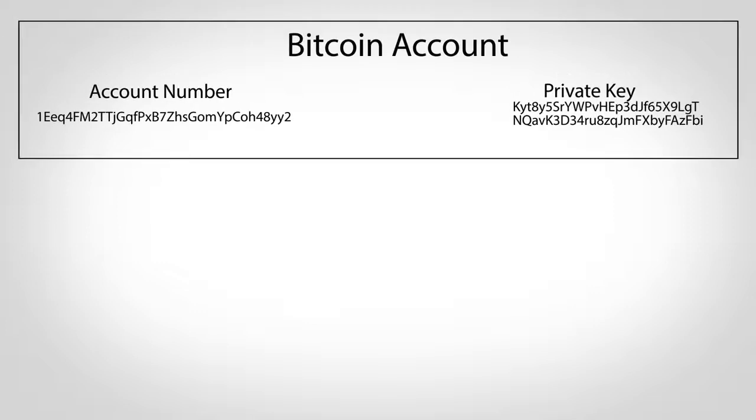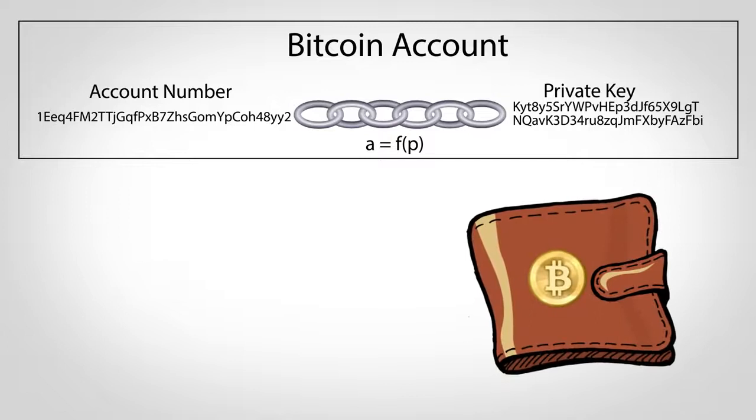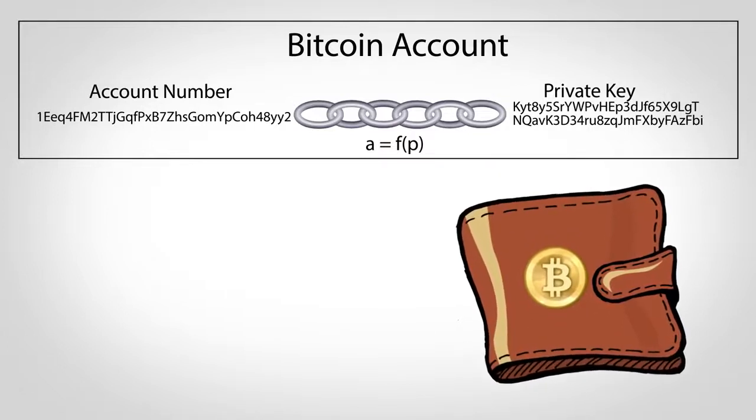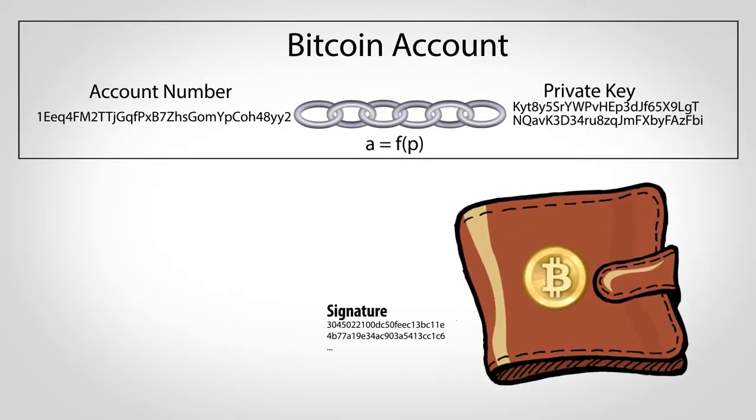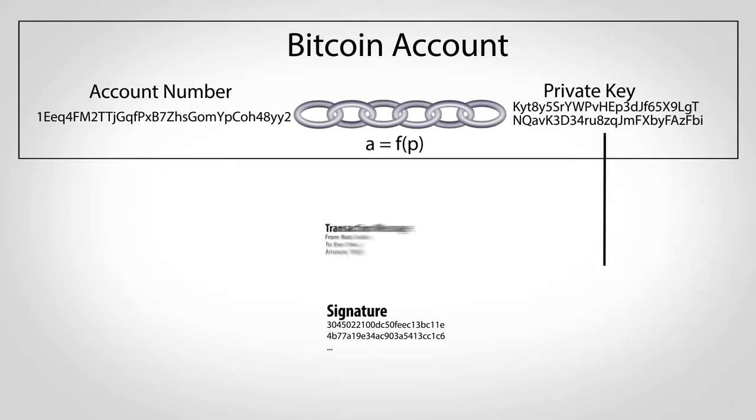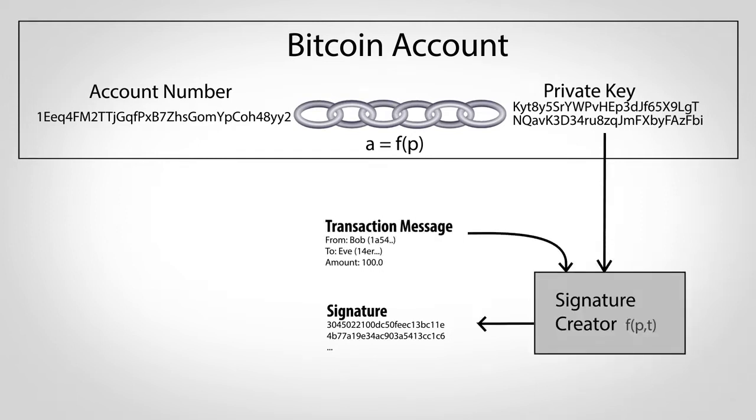When a new account number is created, it comes along with a private key mathematically linked to that account number. If you've heard of a Bitcoin wallet, these keys are what it holds and are what allow you to create signatures. To create a signature, a private key and the text from a transaction are fed into a special cryptographic function.